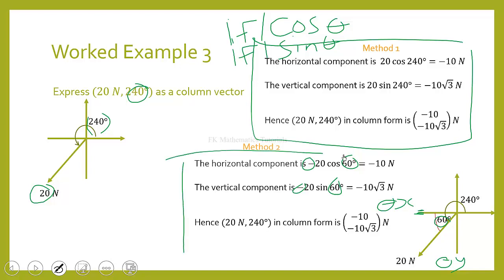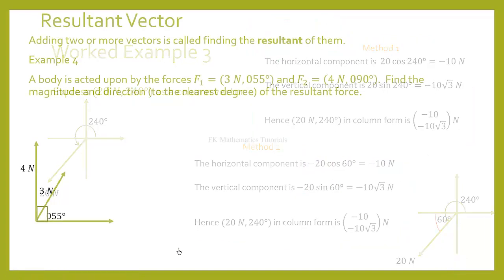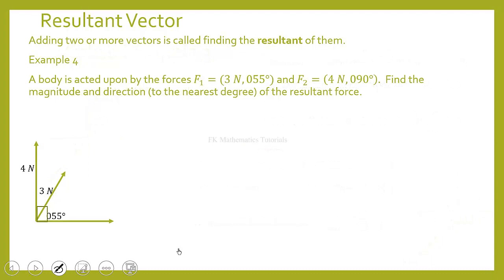Now let's look at the resultant of vectors. When we talk about the resultant of vectors, we are talking about adding two or more vectors together. Adding two or more vectors is called finding their resultant.